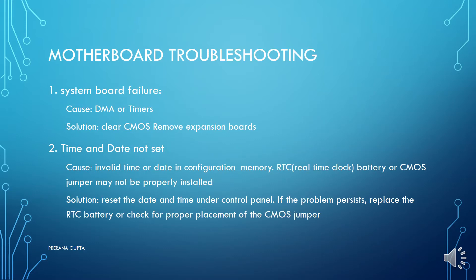For motherboard troubleshooting, the first error is system board failure, which can be caused by DMA or timers. The solution is to clear CMOS and remove expansion boards. The second error is time and date not set — invalid time or date in configuration memory. The real-time clock battery or CMOS jumper may not be working or installed properly. Solution: reset the date and time under Control Panel; if the problem persists, replace the RTC battery or check the CMOS jumper placement.